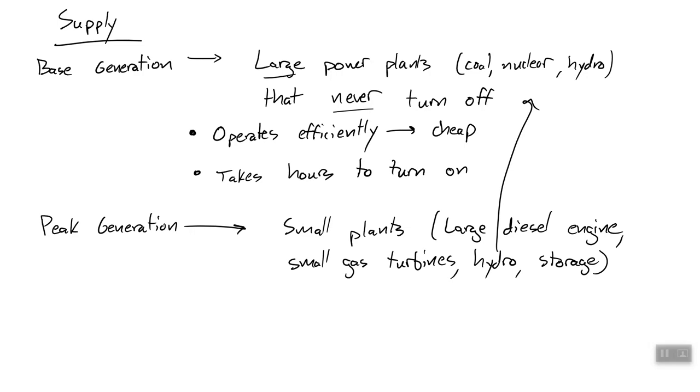So there's kind of two different types of peak generation. There's what we've already called the mid-merit power plants. These are turned on in order to meet daylight demand. So around five in the morning, you might start powering up your smallish gas turbine, which operates somewhat efficiently, but not as efficiently as these larger power plants.